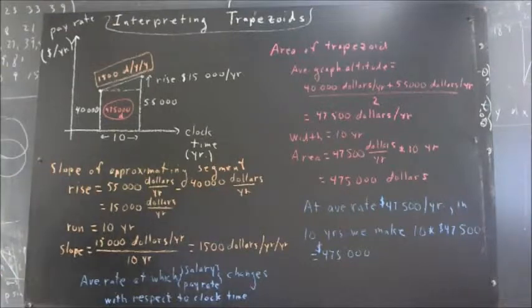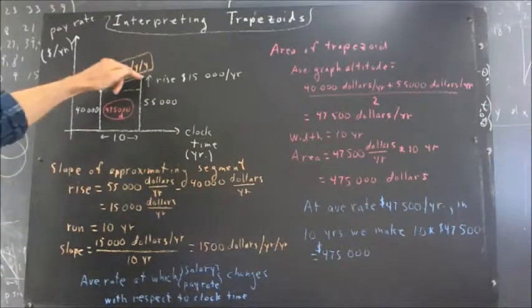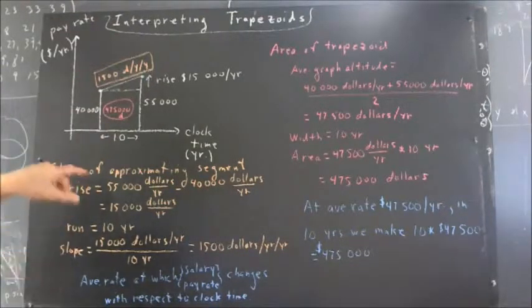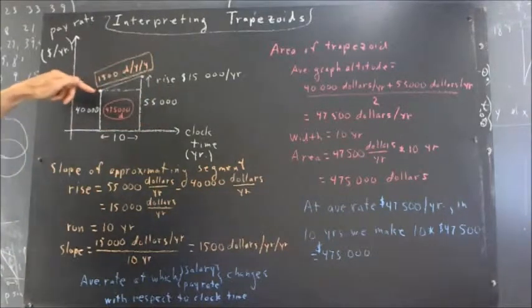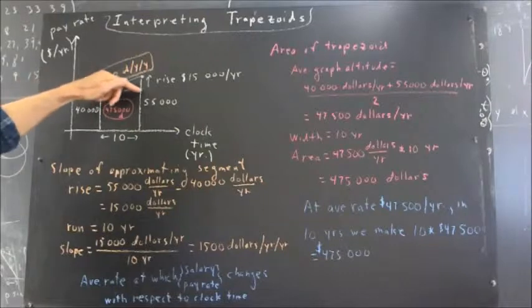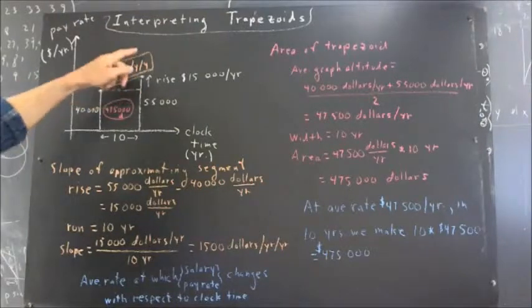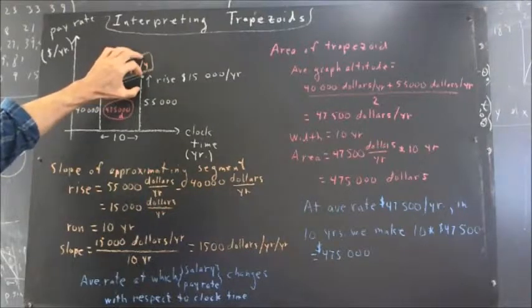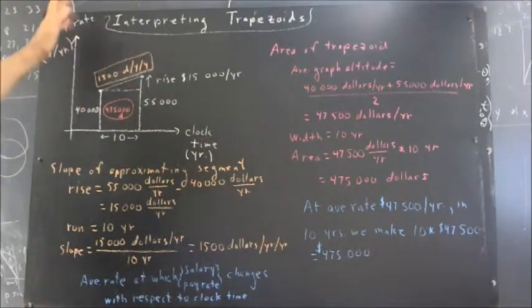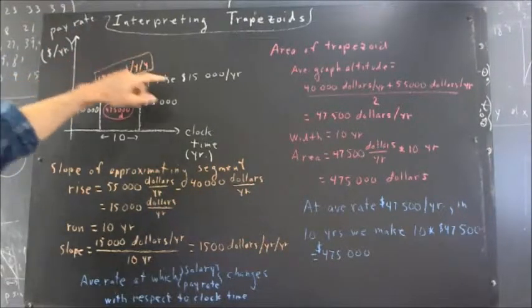Anyhow, the slope of the approximating segment, the segment from here to here, is what? The rise, I've sketched a dotted line here at a right angle to the altitudes. And the rise goes from here to here. It's the change in the vertical coordinate as we move from this point to this point.